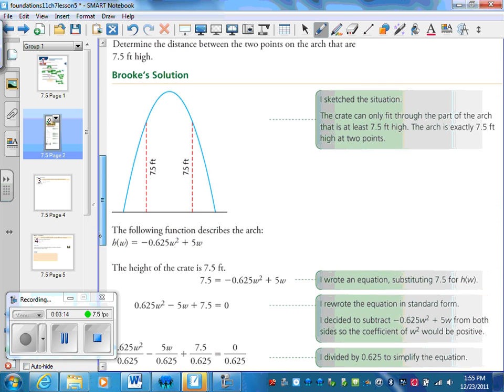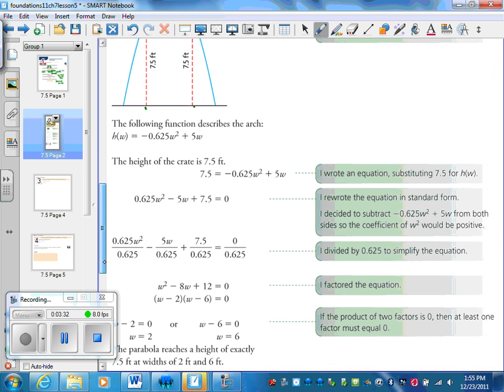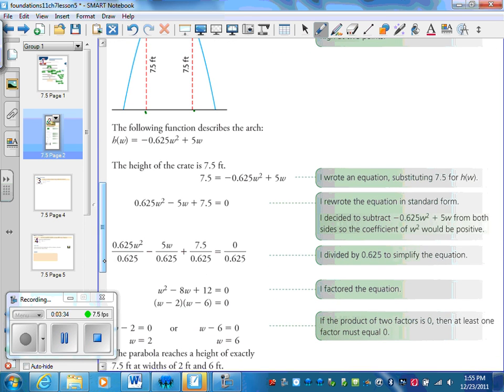What's the maximum width of a 7.5 foot high crate that can enter through the arc? So you're saying at 7.5 feet how wide is it right there. So we're going to go through what our friend Brooke here did. First of all, she sketched it out. She said, well, there's going to be two points where it's 7.5, and that's where that width is. The crate can only fit through the part of the arc that is at least 7.5 feet high. The arc is that high at two points. So here she got her function, and she said, well, I want to know w when height equals 7.5.